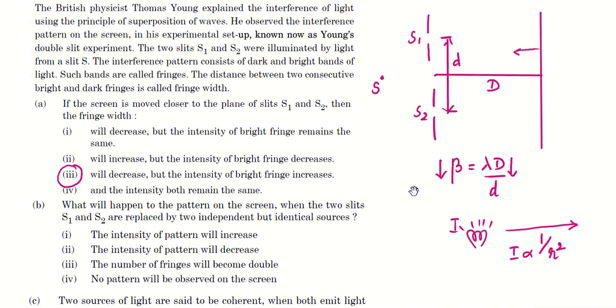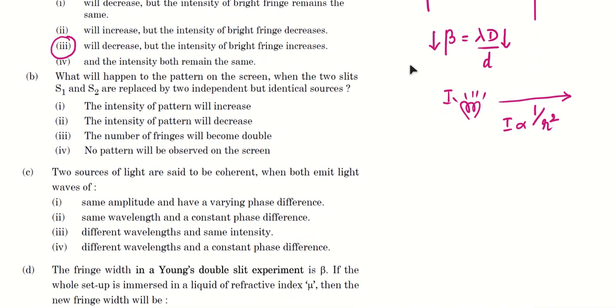Now let's read the second question. What will happen to the pattern on the screen when the two slits s1 and s2 are replaced by two independent but identical sources?